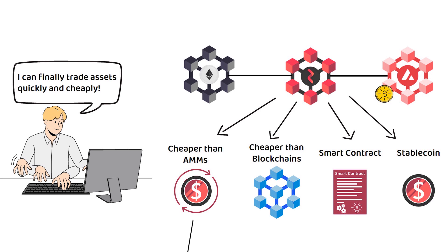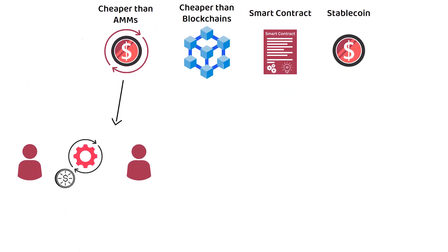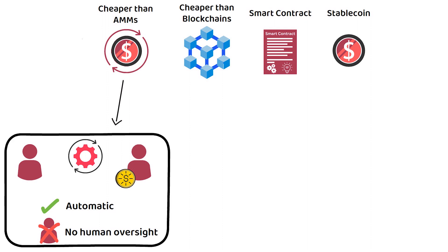In short, automated market makers allow digital assets to be traded in a way that is both automatic and does not require trust or human oversight to function between strangers. Additionally, smart contracts are pre-agreed contracts that execute automatically once the conditions have been met, without the need for trust or human oversight.